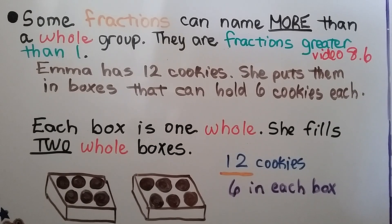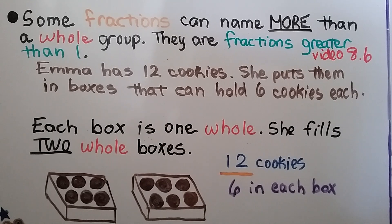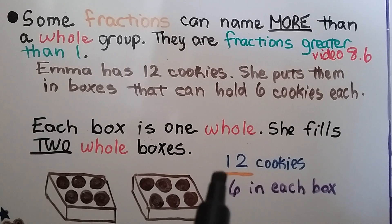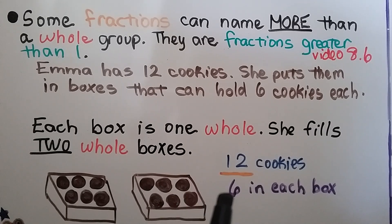Some fractions can name more than a whole group — there are fractions greater than one. We learned about that in the last lesson, video 8.6. Emma has twelve cookies. She puts them in boxes that can hold six cookies each. Each box is one whole. She fills two whole boxes — twelve cookies with six in each box. She's got twelve sixths, that's two whole boxes.